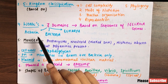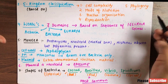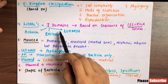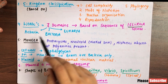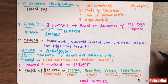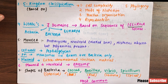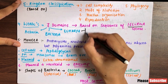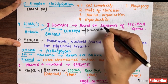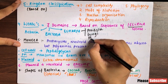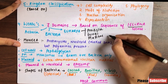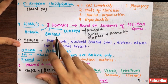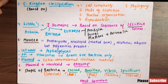Carl Woese's 6-kingdom classification was based on the sequence of 16S rRNA. Based on 16S rRNA sequences, he gave three domains: Archaea, Bacteria, and Eukarya. In Archaea, there are archaebacteria; in Bacteria, there are eubacteria; and Eukarya includes protista, fungi, plantae, and animalia — all of which are eukaryotes.